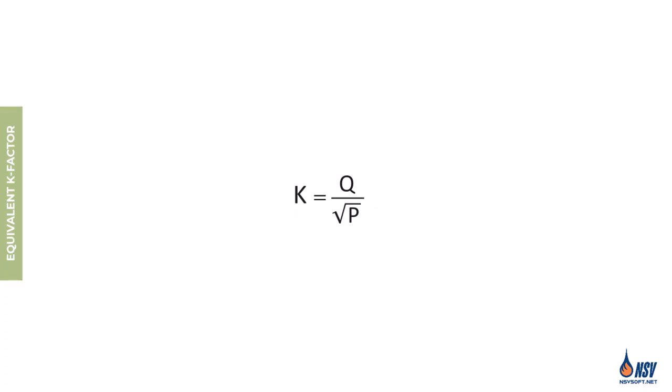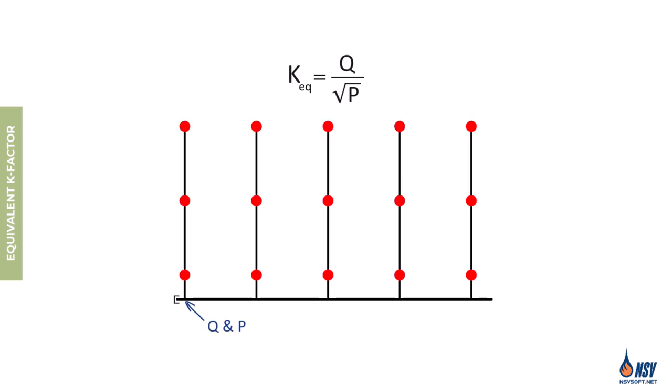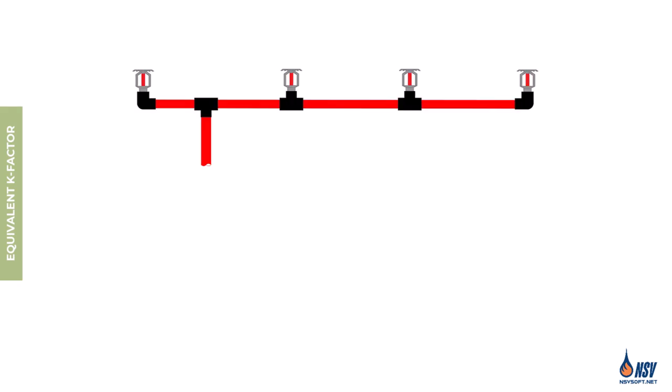Although we've discussed the K factor of individual sprinklers, the same concept can be applied to a section of the system. Whenever we know the flow rate and pressure at a certain point, we can calculate the equivalent K factor for the downstream portion of the system. For example, a flow rate of 70 gpm at 30 psi is calculated at the exact point where the right outlet of the tee connects to the branch line serving three sprinklers.